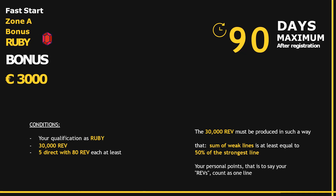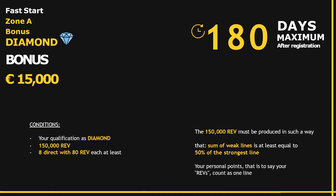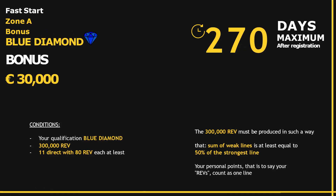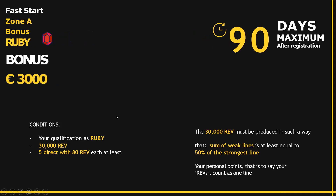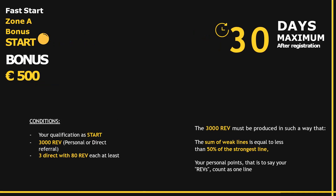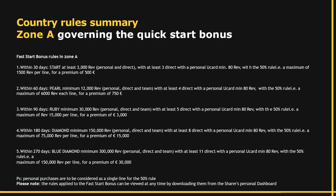If you can achieve Ruby within the first 90 days with 30,000 REV and five direct downlines with at least 80 REVs — and this balance rule is respected — you'll get an additional 3,000 euros. If you achieve diamond within your first 180 days, that's 15,000 euros. If you become blue diamond within your first 270 days — that's about nine months — you will get 30,000 euros. So while you're still ramping up your business, you could be earning already over 50,000 euros all the way to blue diamond.